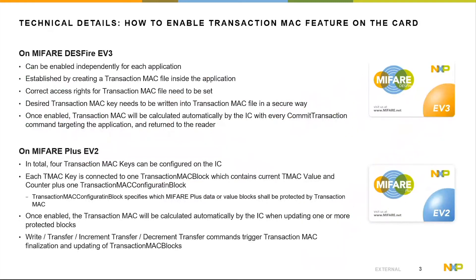Now let's look at how the Transaction MAC feature can be enabled on the card. For MIFARE DESFire EV3, the feature can be enabled independently for every application present on the card. It is enabled by creating the Transaction MAC file inside the application; the correct access conditions need to be set for the Transaction MAC file, and a Transaction MAC key value needs to be written into the file directly. After the feature is enabled, the Transaction MAC will be calculated automatically by the card at every commit transaction command.